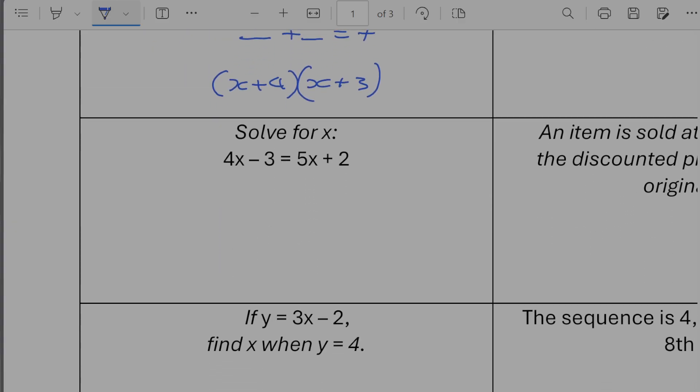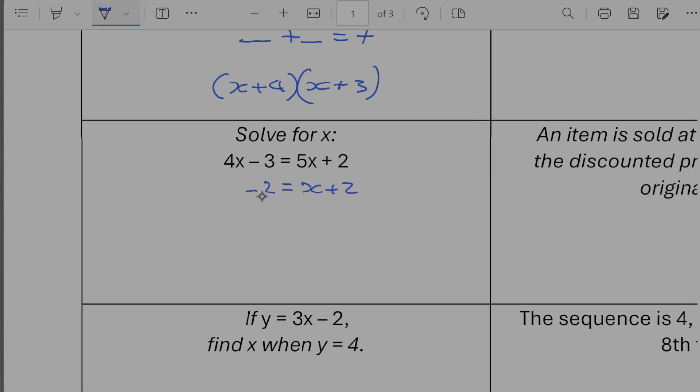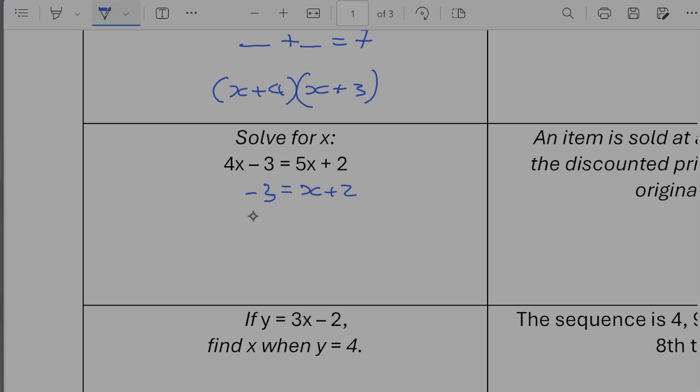Solve for x. 4x minus 3 is equal to 5x plus 2. So I've got more x's on my right. So I'm going to minus 4x from both sides. So minus 3 is equal to x plus 2. Minus 2 from both sides. So minus 5 is equal to x. So x is equal to minus 5.